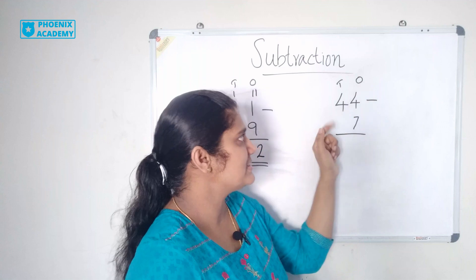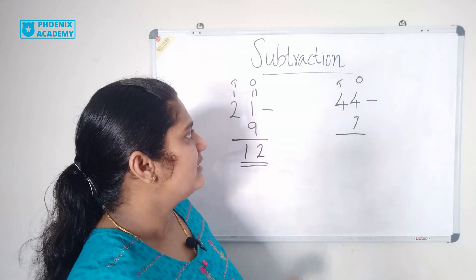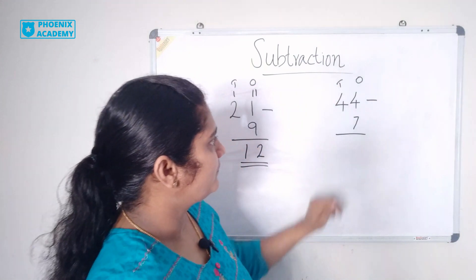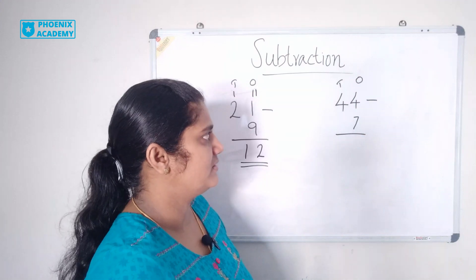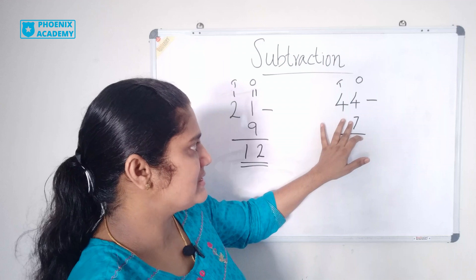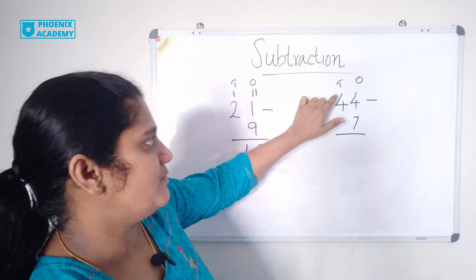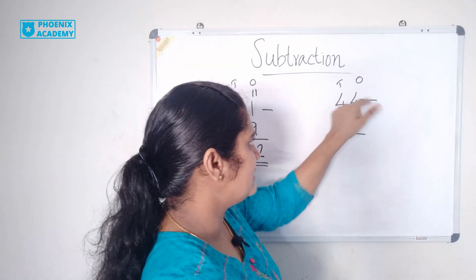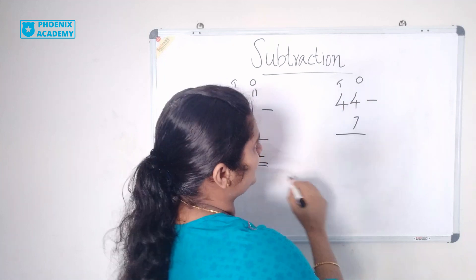44 is 4 ones and 4 tens. Let's subtract ones now. 4 minus 7. 7 is a bigger number so we cannot subtract 7 from 4. So we borrow 1 tens from tens place.